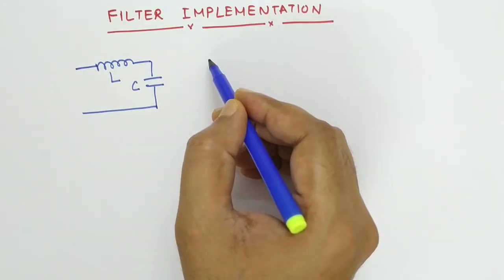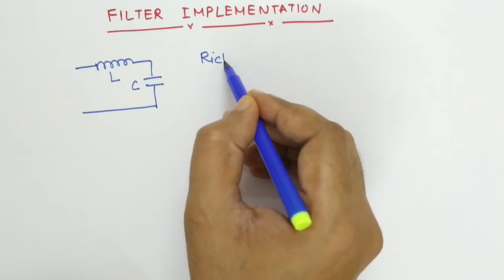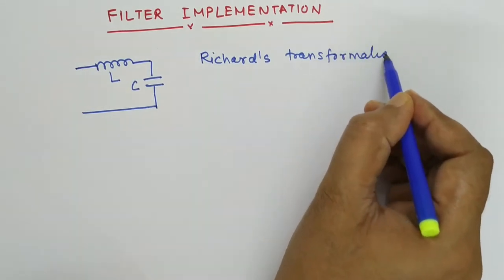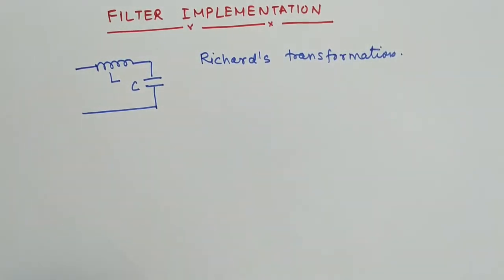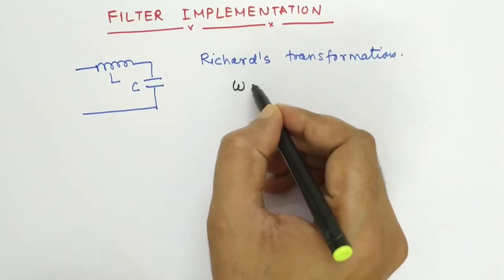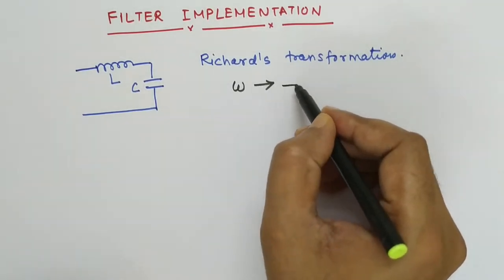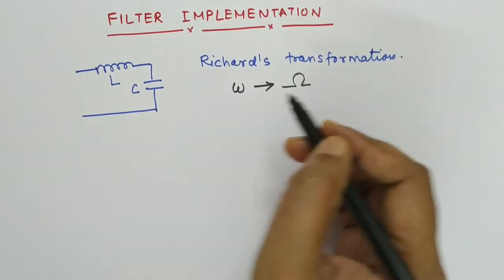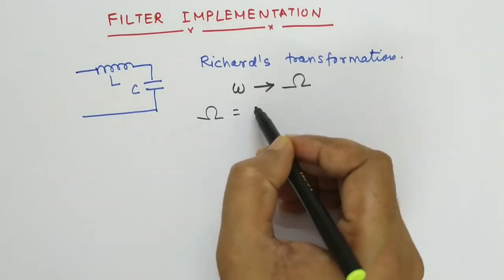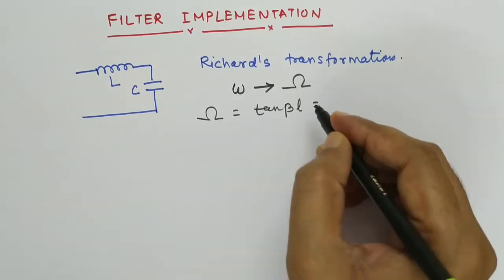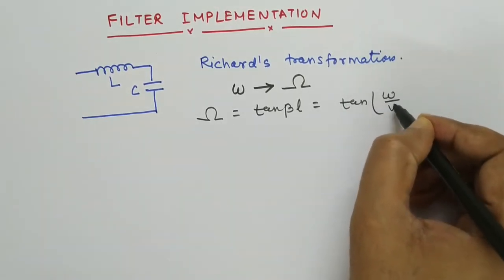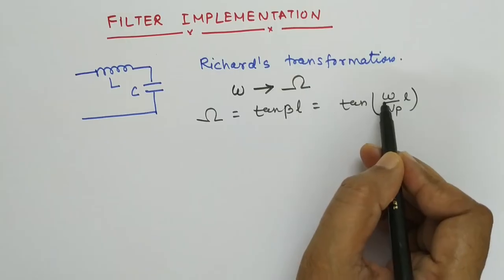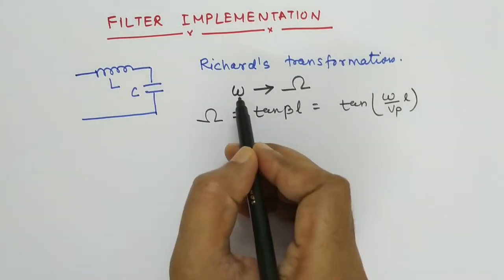The first transformation method required for this is called Richards transformation. In Richards transformation, the frequency dependence omega (ω) is converted into a capital Omega (Ω), which is a different plane. This capital Omega is considered as tan(βL). As we know that beta (β) is omega divided by VP, capital Omega is also frequency dependent.